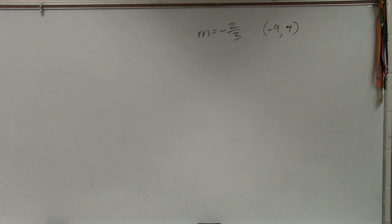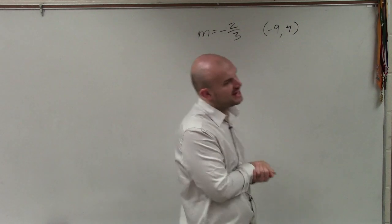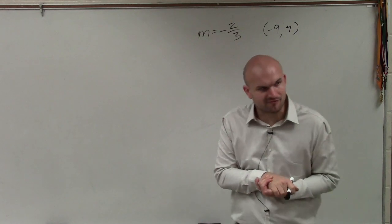All right. So in this example, ladies and gentlemen, we have m equals negative two-thirds, and we have a point negative nine, four.